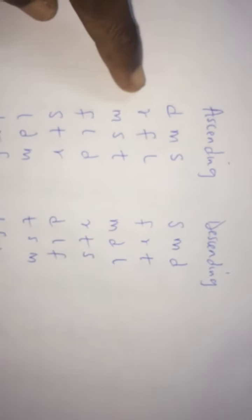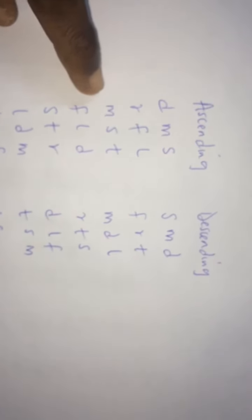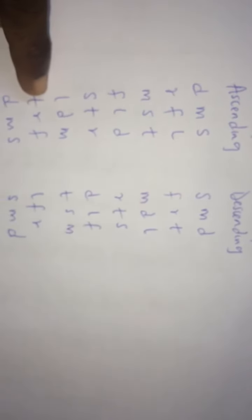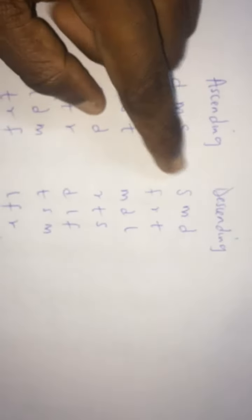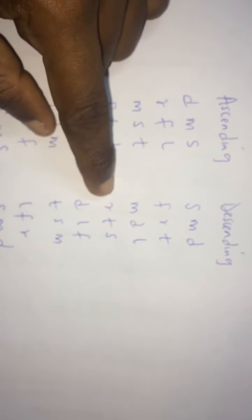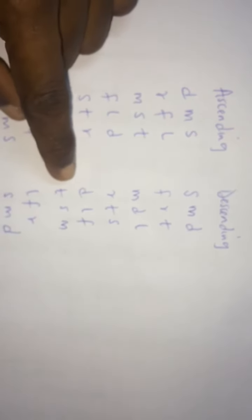Do mi so re fa la mi so ti fa la do so ti re la do mi ti re fa do mi so. Then descending: so mi do fa re ti mi do la re ti so do la fa ti so mi la fa re so mi do.